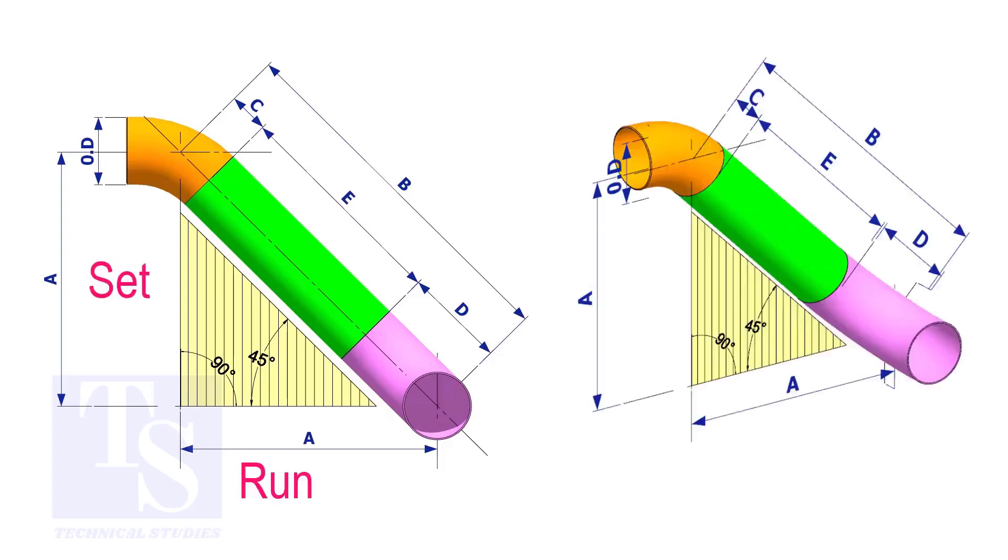In an offset, if the including angle is 45 degrees, the set and the run shall be the same. If the value of the set and the run are equal, the value of the travel is set or run multiplied by 1.414.